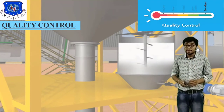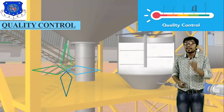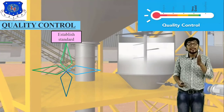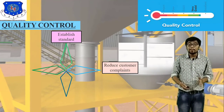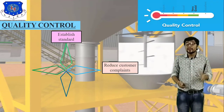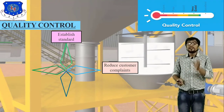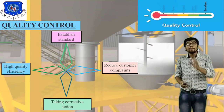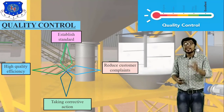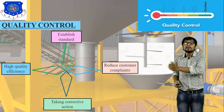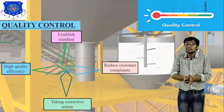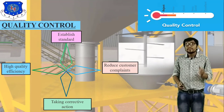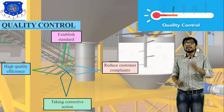The steps of quality control are: first, establish a standard — identify customer requirements. Second, reduce customer complaints by revalidation. Third, take corrective action. Fourth, achieve high quality efficiency. Integrating all these — establishing standards, reducing customer complaints, taking corrective action, and high quality efficiency — gives you quality control. It is the combination of quality, satisfying the customer need, and control through inspection.